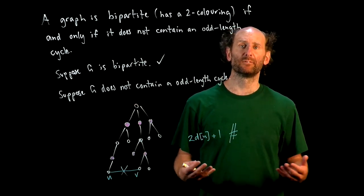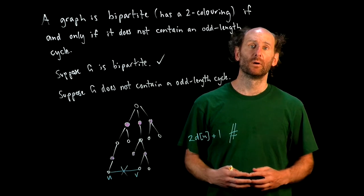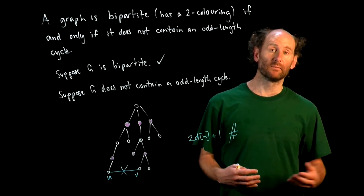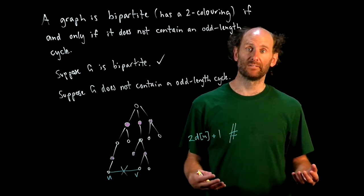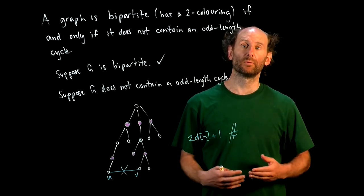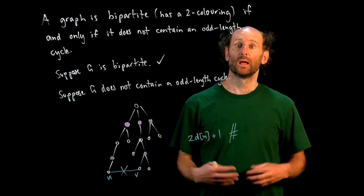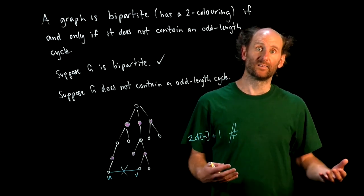So this proof gives us a method for finding a bipartition or showing that such a bipartition doesn't exist. We simply need to run a BFS, record which level each vertex is on, and that of course only takes linear time.